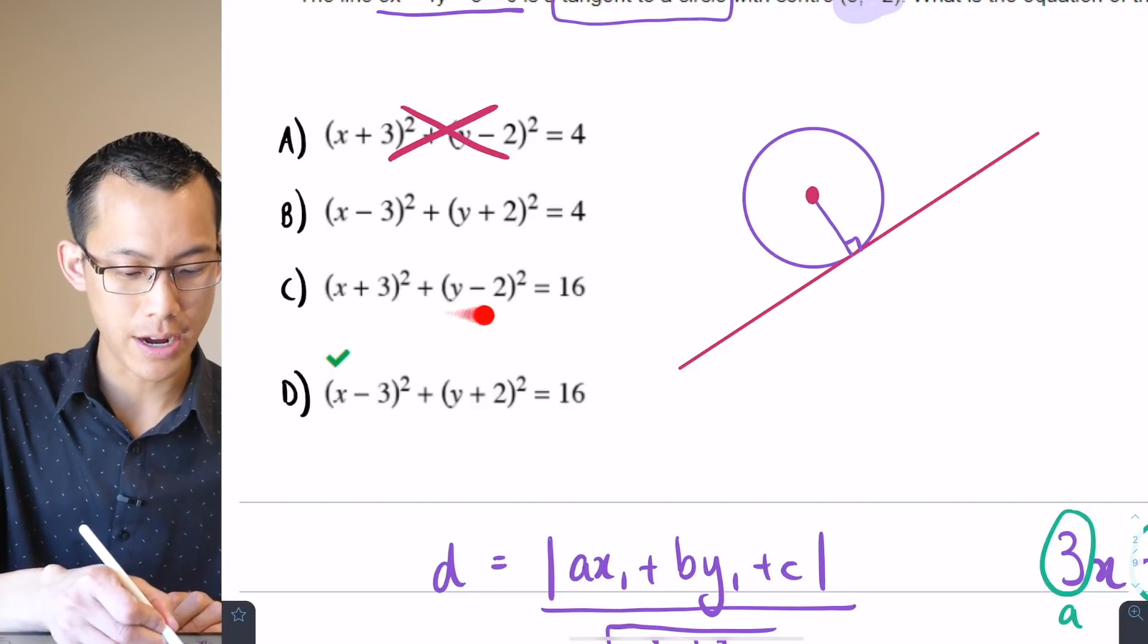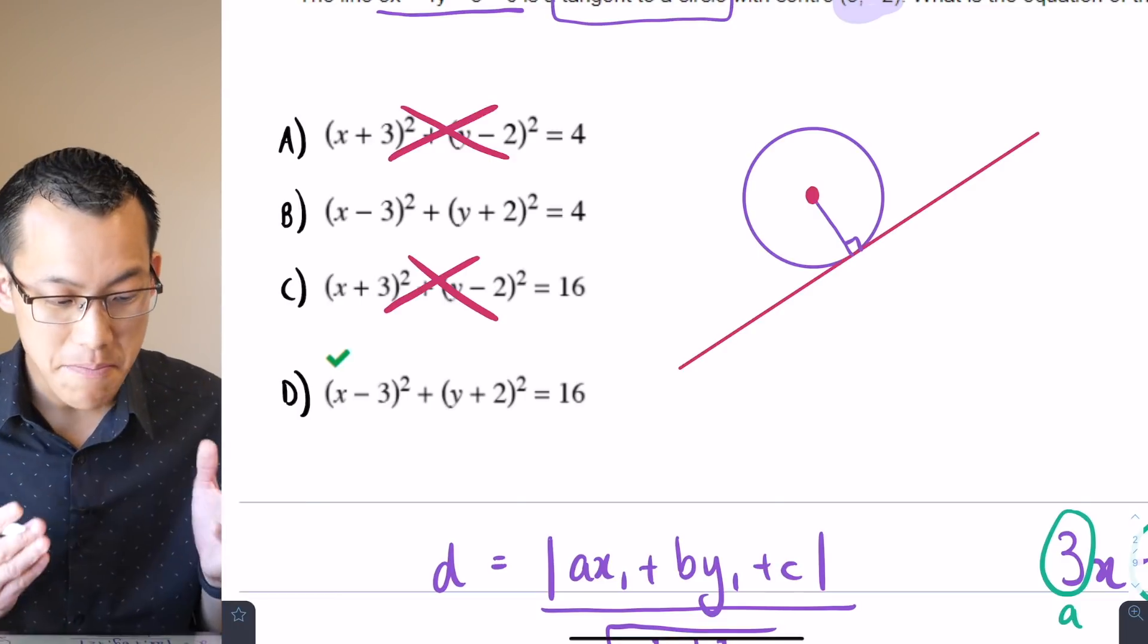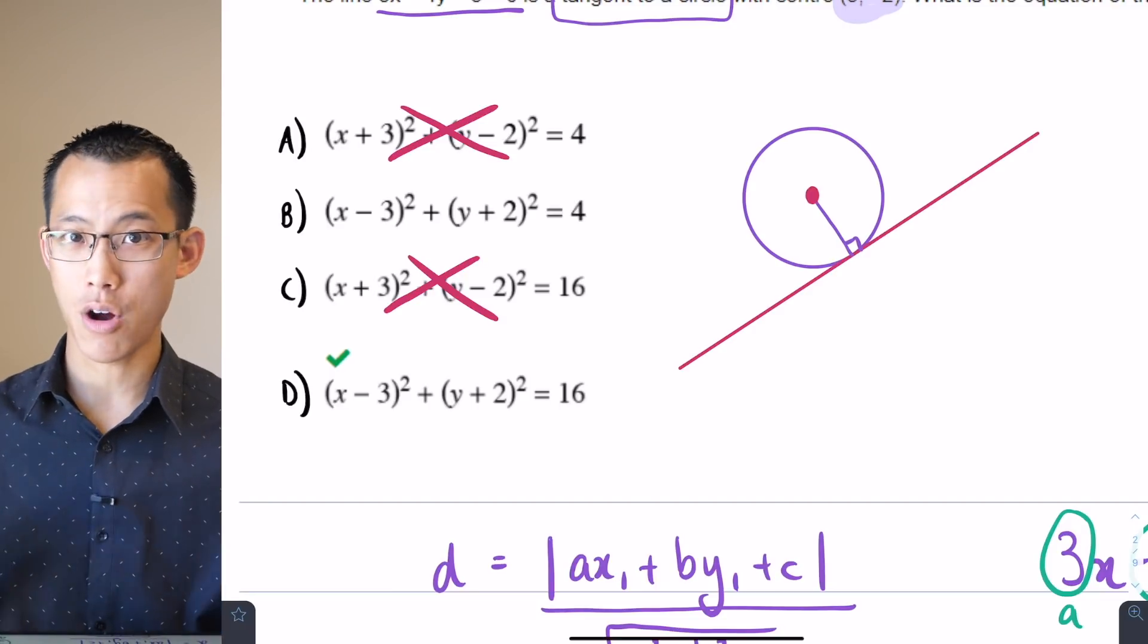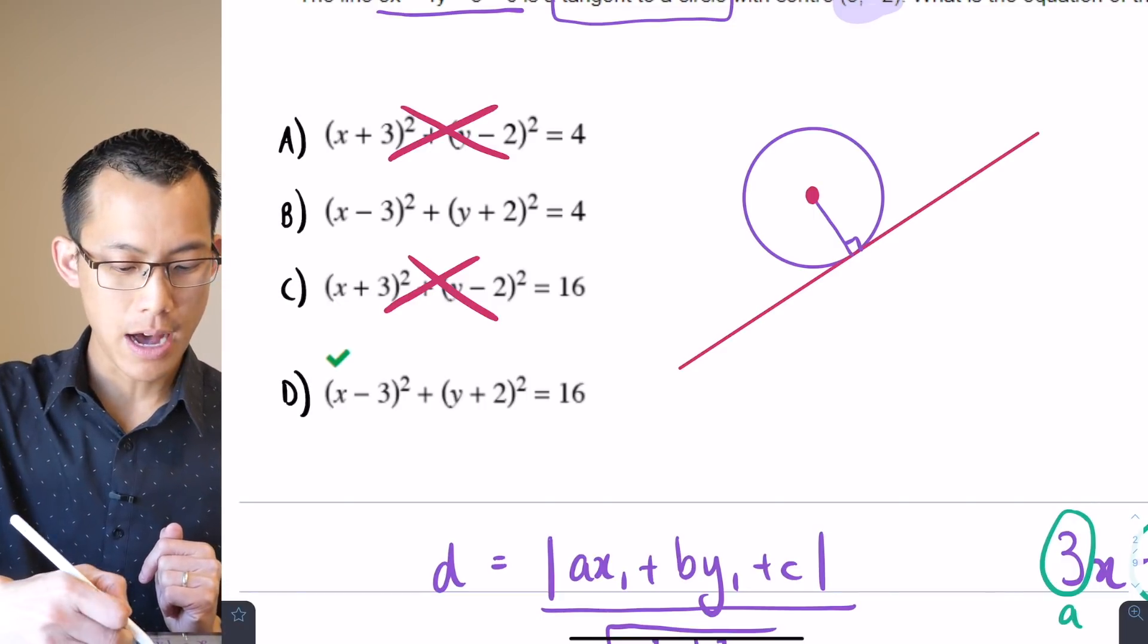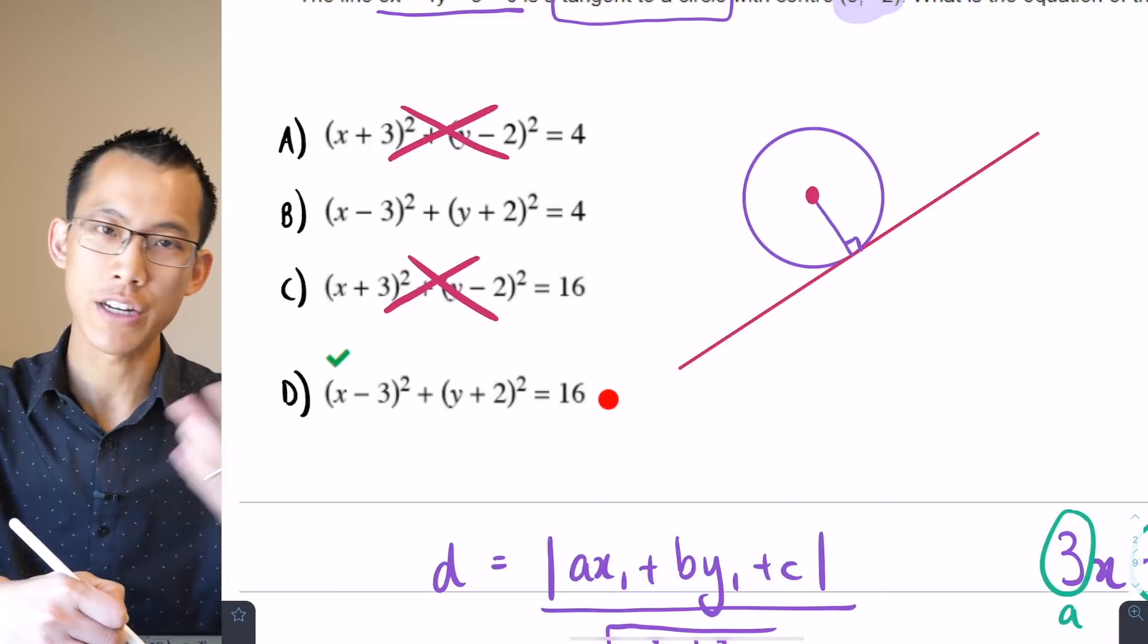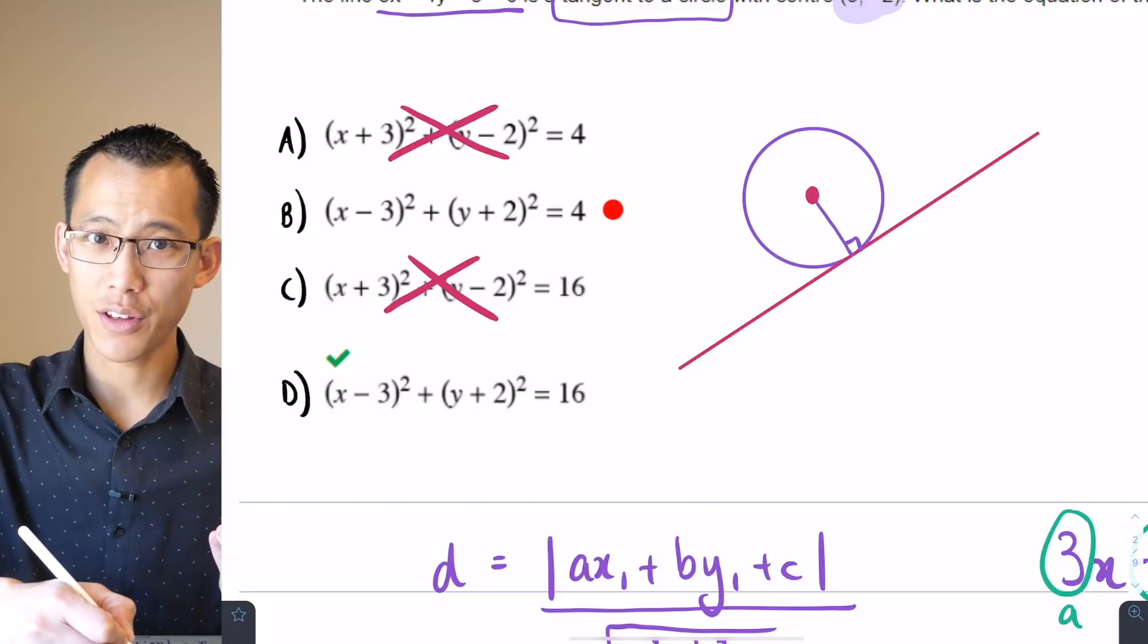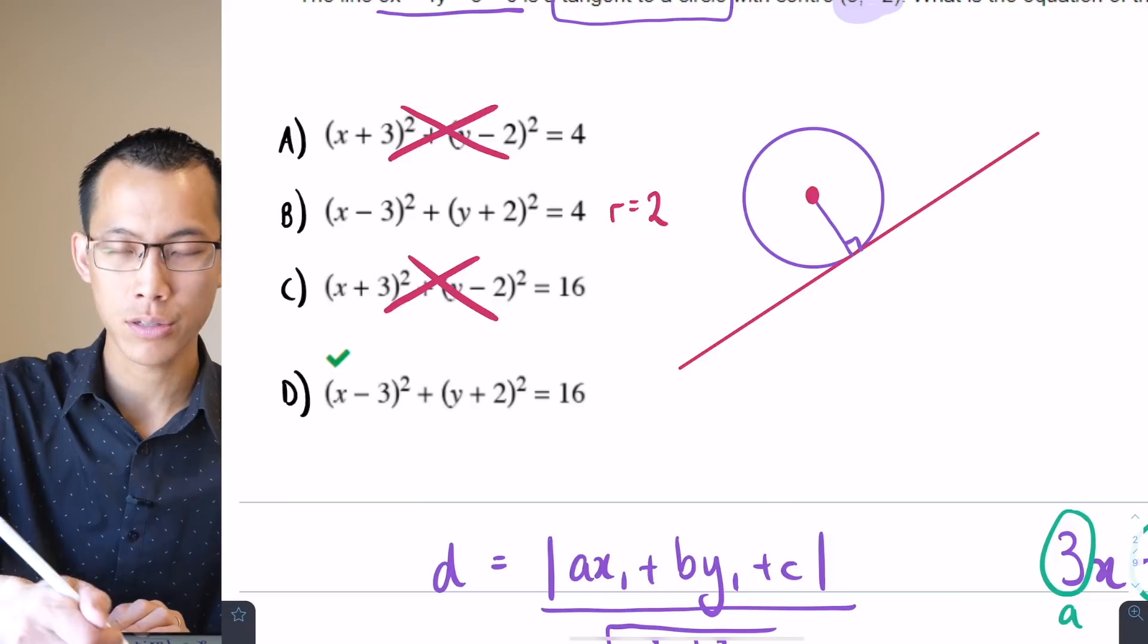So I straight away know some of my options are not going to be relevant. For example, you can see here, this top one here, the signs are backwards. Instead of getting minus 3 plus 2, I have them the other way around. So that one's incorrect. And I can see that option C has the same problem. It's also, you can see here, plus 3 and minus 2. So I'm going to get rid of that as well. So immediately I've gotten down to B and D.